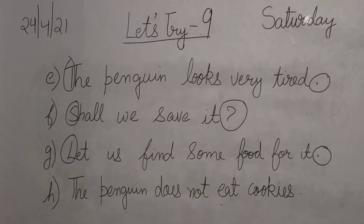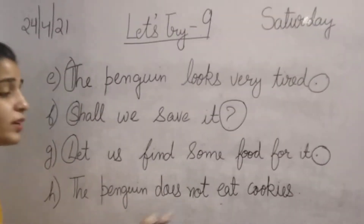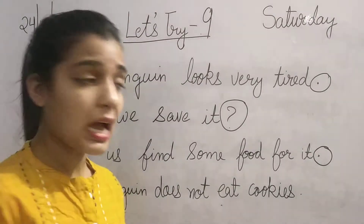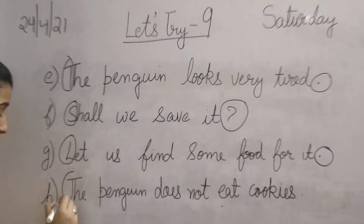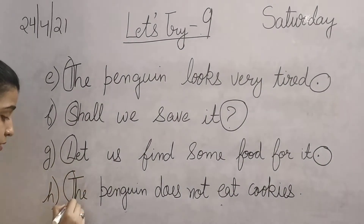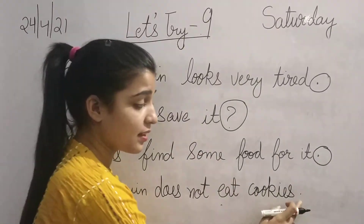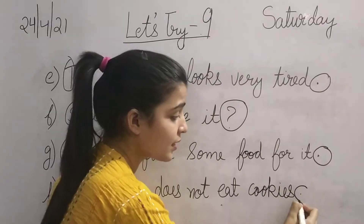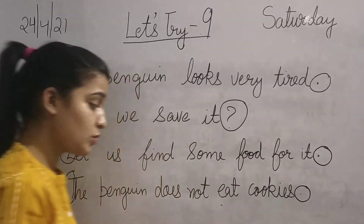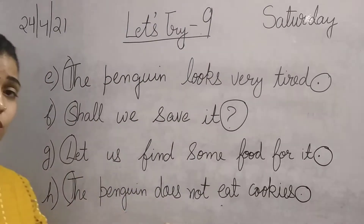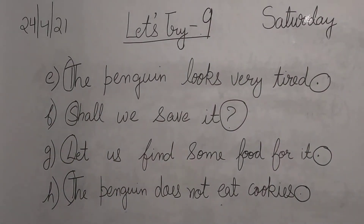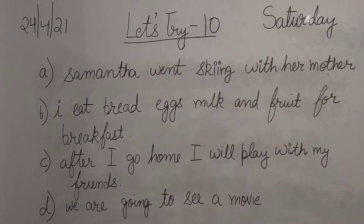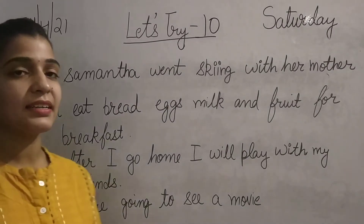The last sentence is: 'The penguin does not eat cookies.' The first letter is T and it is capital — circle the T. And at the last there is a full stop — circle the full stop. In this sentence also, there are two punctuations. So we have done Let's Try 9.